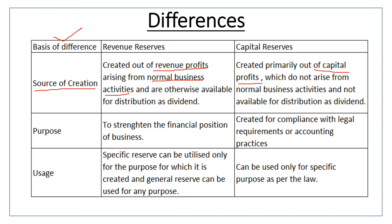Capital profit is not to be distributed as dividend, whereas revenue reserve can be distributed. Capital reserve can be used for issuing bonus shares and writing off capital losses. The purpose of revenue reserve is to strengthen the financial position of the business.